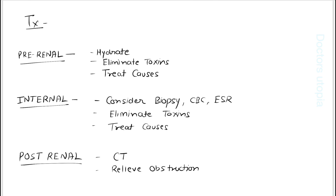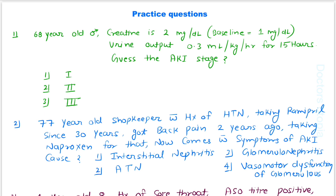To treat AKI, we should first identify the cause. For pre-renal, we should hydrate the patient. For intrinsic renal, eliminate the toxins, consider biopsy, CBC, and ESR to find the cause. For post-renal, we should do a CT scan — without contrast — and relieve the obstruction. Always treat the underlying cause.